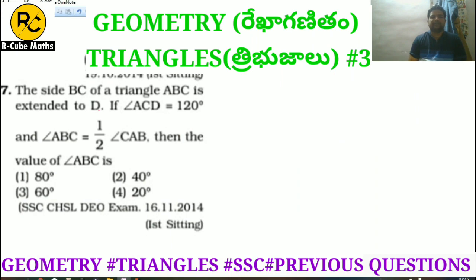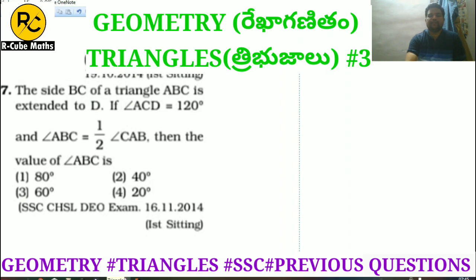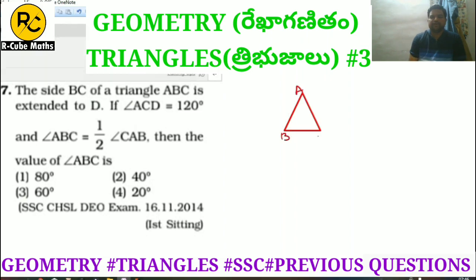Question 6: The side BC of a triangle ABC is extended to D. Angle ACD is 120 degrees and angle ABC is half of angle CAB. Find the value of angle ABC. The exterior angle formed at D is 120 degrees.